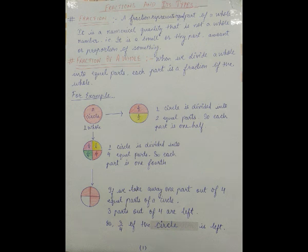Now, let us take away one part out of the four equal parts of the circle. As you can see in the figure, three parts out of four are left. So, three by four of the circle is left.